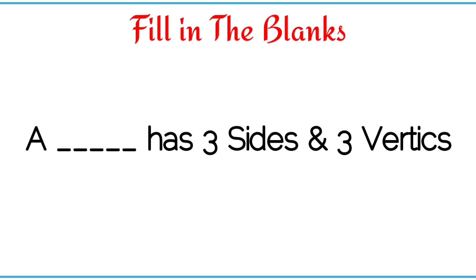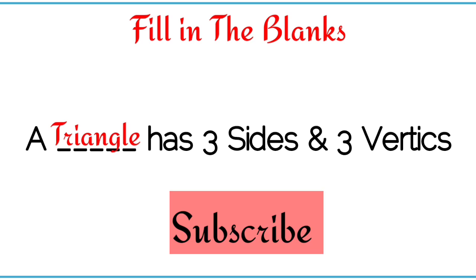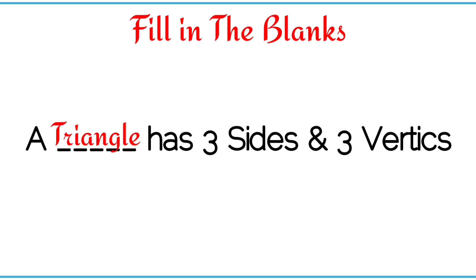A dash has three sides and three vertices. Triangle — a triangle has three sides and three vertices.